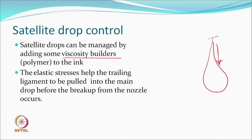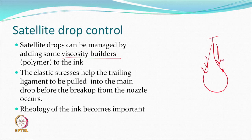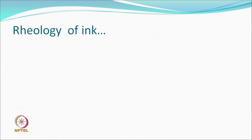Why does this work? The small increase in viscosity creates elastic stresses which help the trailing ligament to be pulled back to the drop itself before breaking up from the nozzle. This is one way ink manufacturers control satellite formation and improve print quality. This is why rheology becomes important even in low viscosity systems.